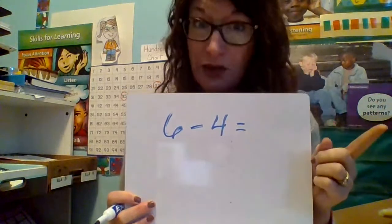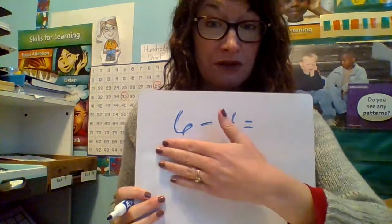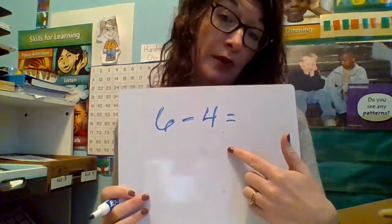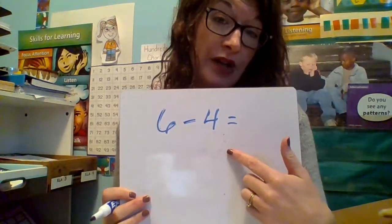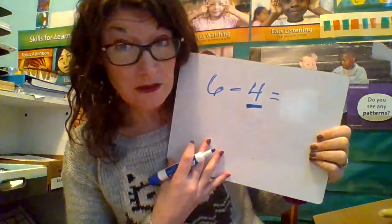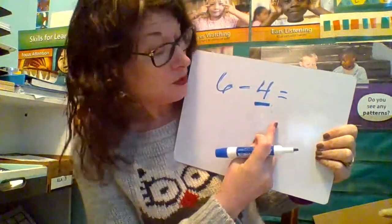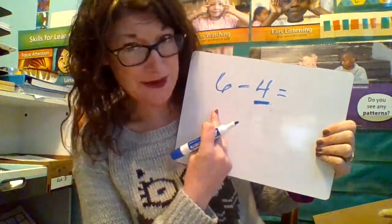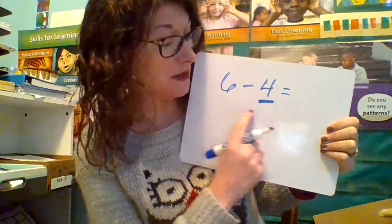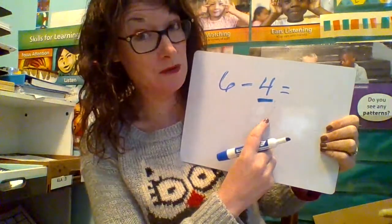That's the tricky part. When you use a new strategy, you want to make sure you use the correct digit first. In this example, 6 minus 4, you're actually going to be starting with number 4, because the act of subtraction is taking away. So we're going to go backwards — that's going to be really different, like the opposite of reading.